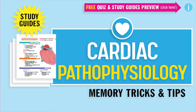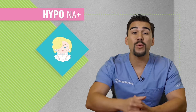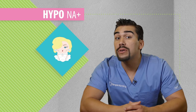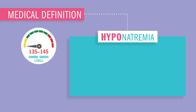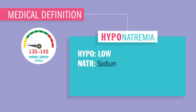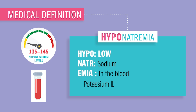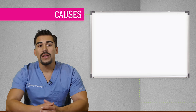Alright guys, let's begin. Today we're wrapping up hyponatremia. Hypo meaning low, natra meaning sodium, and emia meaning in the blood. So sodium less than 135 micro equivalents in the blood.